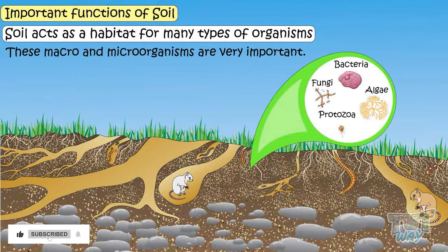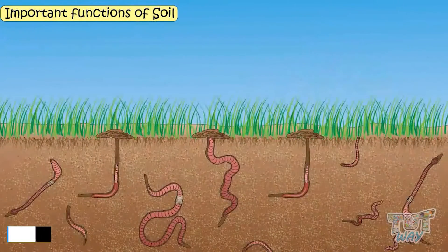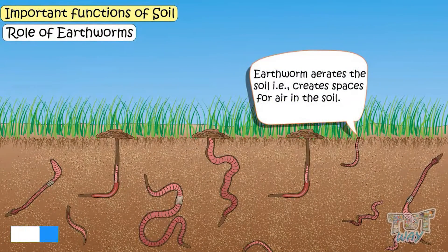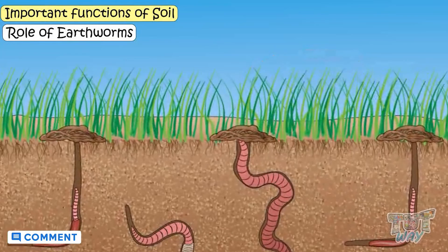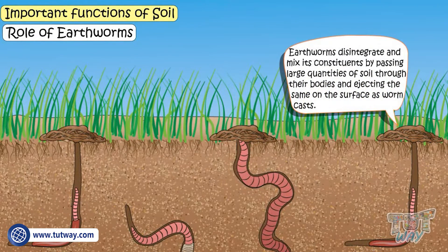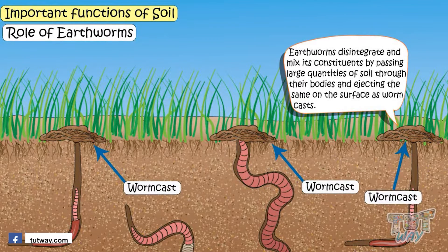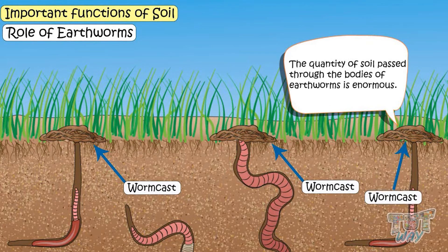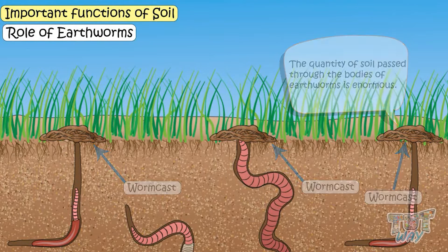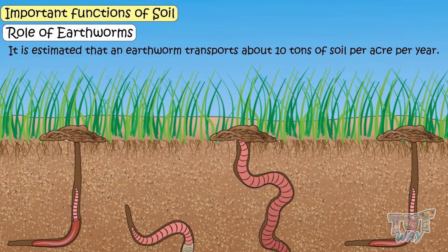These macro and micro organisms are very important. Earthworms aerate the soil — that is, create spaces for air in the soil — and also help to disintegrate and mix its constituents by passing large quantities of soil through their bodies and ejecting the same on the surface as worm casts. The quantity of soil passed through the bodies of earthworms is enormous. It is estimated that earthworms transport about 10 tons of soil per acre per year.